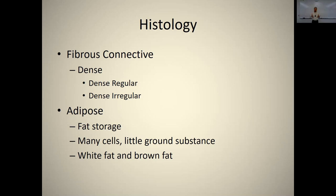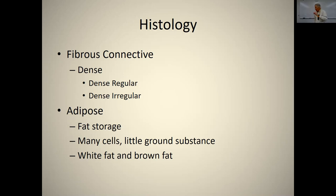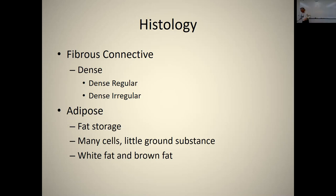Adipose tissue is fat storage. It's a bit unusual in that it's mostly cells with just a little ground substance. There are two types: white fat, which is fat storage, and brown fat, which is heat production. It was once thought only infants had brown fat, but adults have it too. On a cold day, brown fat burns ATP just to make heat without doing any mechanical work.